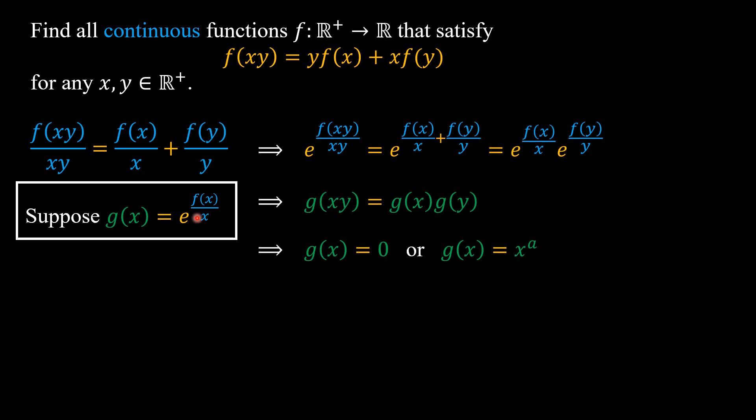Since e to the power of any real number is always positive, so g(x) equal to 0 is not possible. So we have g(x) equal to x to the power of a.